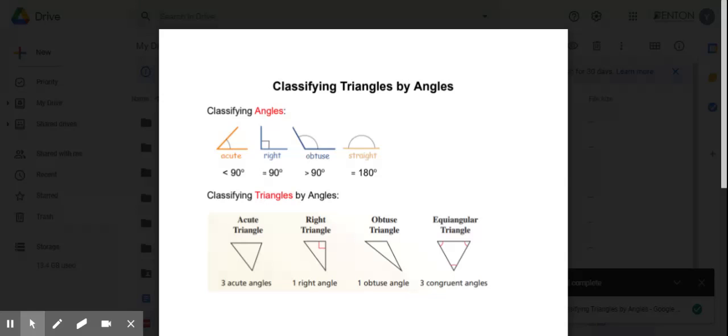The first type, acute triangle. All three angles are acute. Even the biggest one is less than 90 degrees.